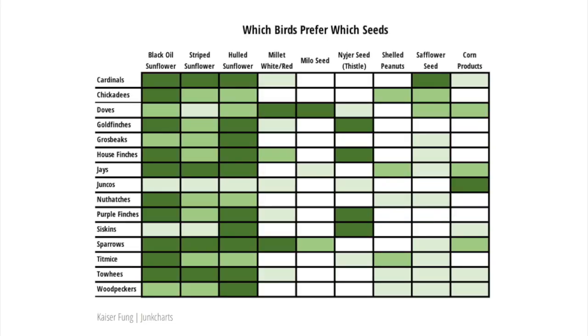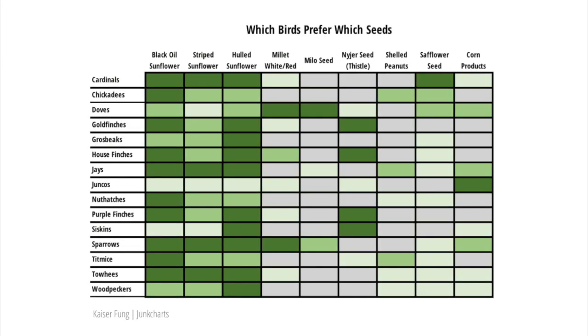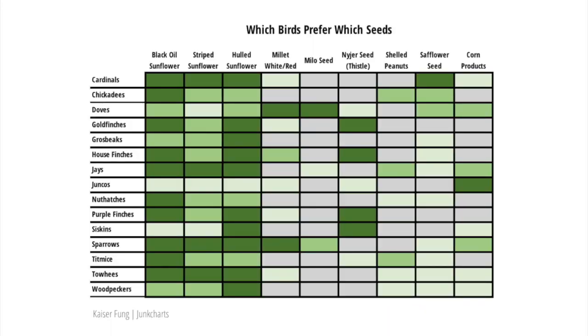Those white cells are calling at you. Well, either they don't know anything about the bird-seed pair, or they do know that one should never feed that type of bird that type of seed. In both cases I would like to gloss over those particular cells, so I made them gray, pushing them into the background.